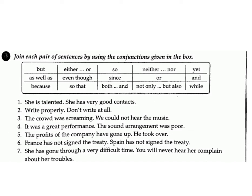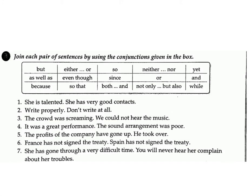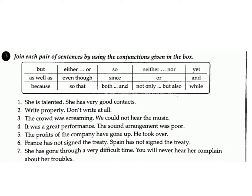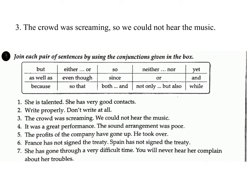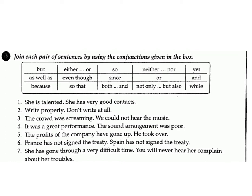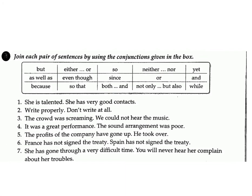Exercise F: Join each pair of sentences by using the conjunctions given in the box: but, either...or, so, neither...nor, yet, as well as, even though, since, or, and, because, so that, both...and, not only...but also, while. One: 'She is talented / she has very good contacts.' Answer: Not only is she talented but also she has very good contacts. Two: 'Write properly / don't write at all.' Answer: Either write properly or don't write at all. Three: 'The crowd was screaming / we could not hear the music.' Answer: The crowd was screaming so we could not hear the music.